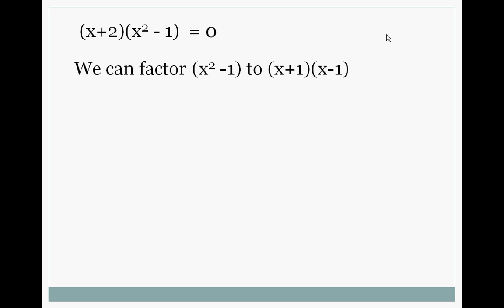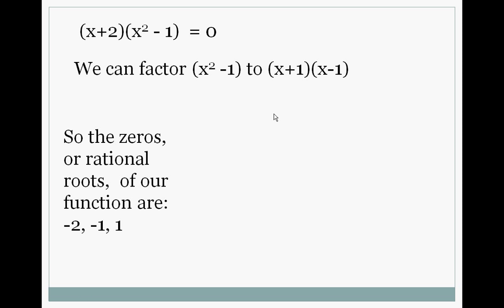So there's our three roots. Our three rational roots for our original polynomial. We have our -2 and our -1 and our 1. And you see the three places where it hits the x line in our graph.